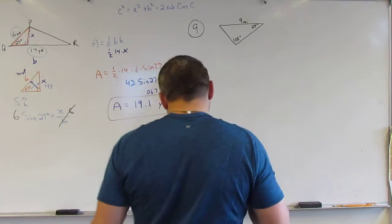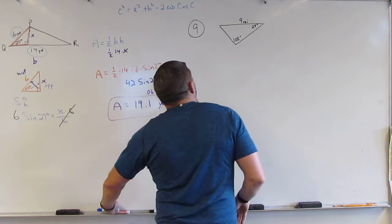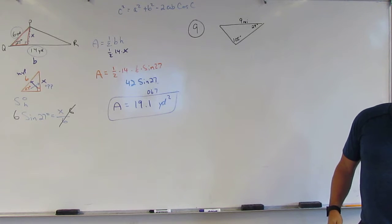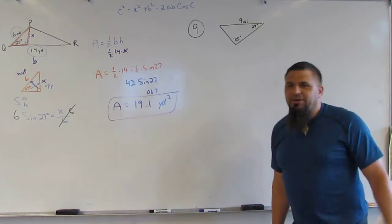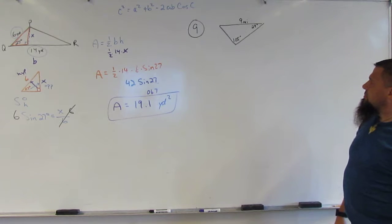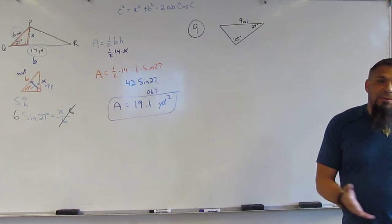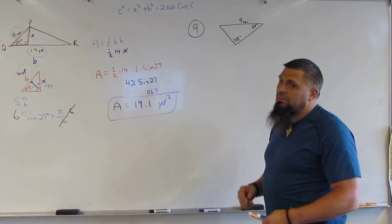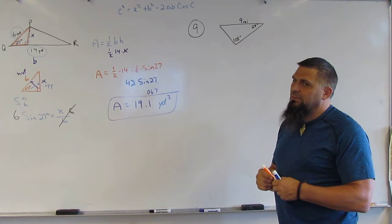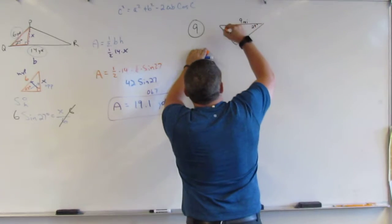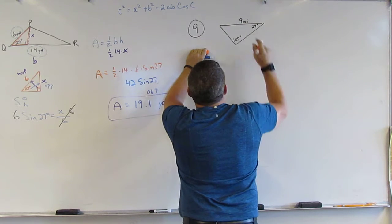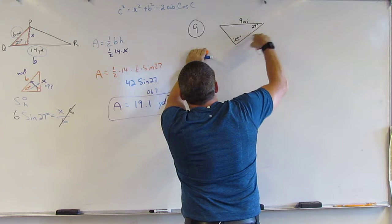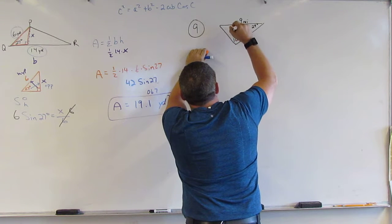Alright, number nine — this takes us back to geometry. How many angles in a triangle? All the angles add up to 180. So 29 and 105 is 134, and 180 minus 134 — 130 leaves 50, and then 4 from 50 would be 46.